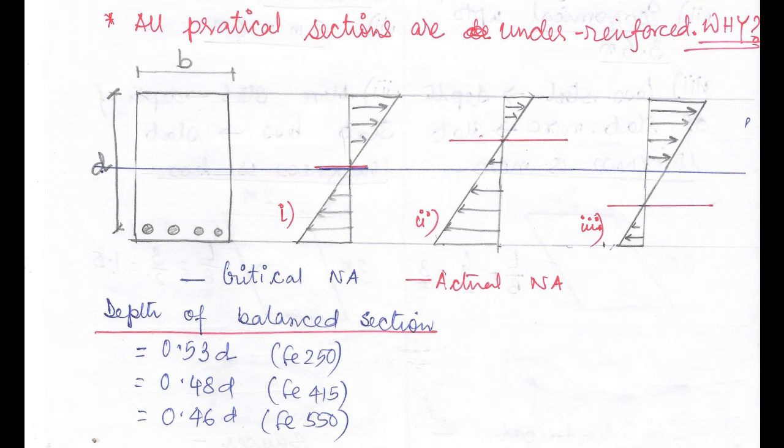Please remember this table: for mild steel FE 250, the depth of the balanced section is 0.53D. D is the effective depth — from the center of the reinforcement to the farthest fiber. For FE 415, it is 0.48D, and for FE 550, it is 0.46D.